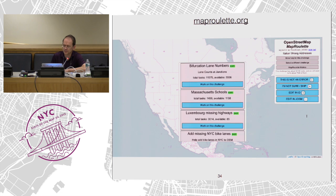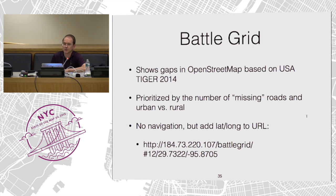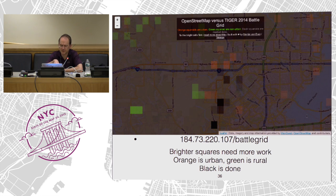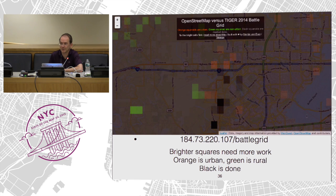Also by Telenav, a program I really like is called Battle Grid. It's the only tool I'm showing you that is US-based and the only one that is geometry-based. It takes Tiger 2014, overlays it onto OpenStreetMap, and produces basically a diff — wherever it finds a lot of differences between the two, it prioritizes those by coloring little squares. It does not have navigation, but you can add your own lat/long to the bottom of the URL. Darker colors mean more errors, lighter colors fewer. Orange is urban, green is rural, and the black ones have been completed. This is a great way to waste a lot of time because I love putting in new streets.